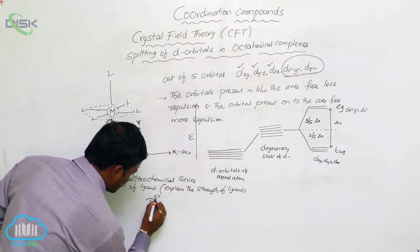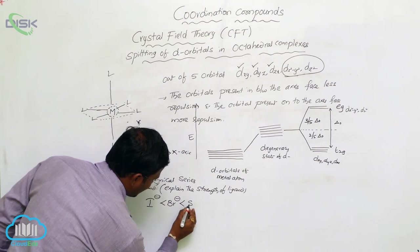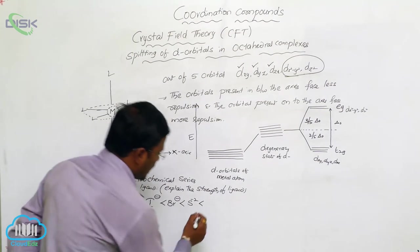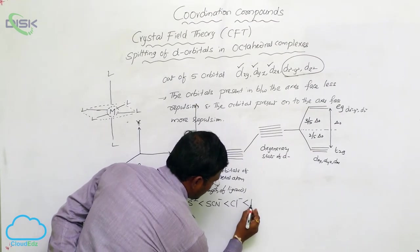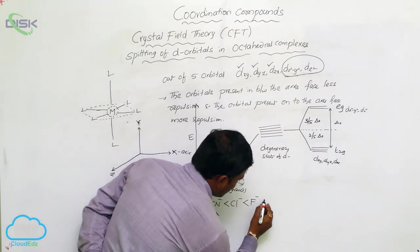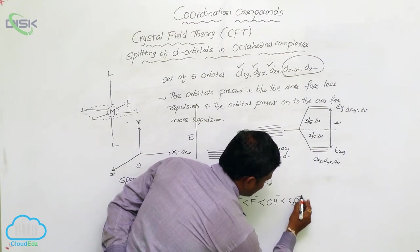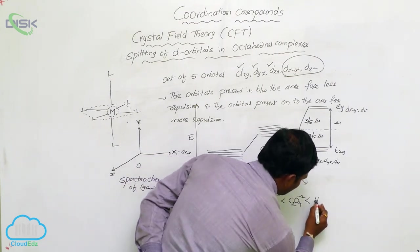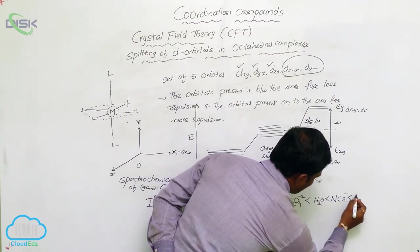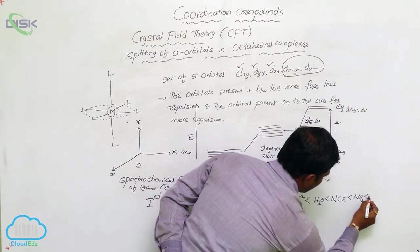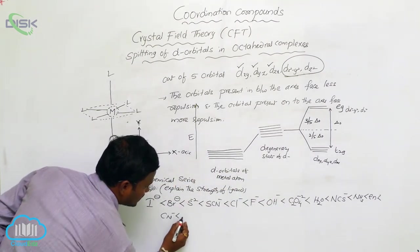The spectrochemical series of ligands is as follows: I⁻ (iodide) is a weak field ligand, then Br⁻, then S²⁻ (sulfide), then SCN⁻ (thiocyanate), then Cl⁻, then F⁻, then OH⁻, then C₂O₄²⁻ (oxalate), then H₂O (water), then NCS⁻, then NH₃ (ammonia), less than ethylenediamine, less than CN⁻, less than CO.